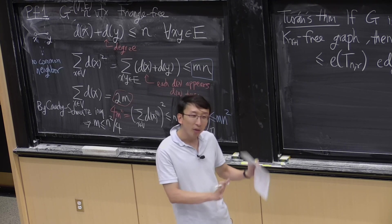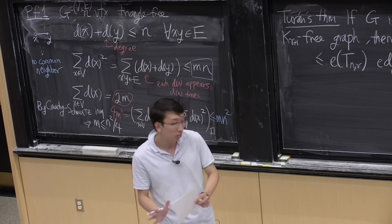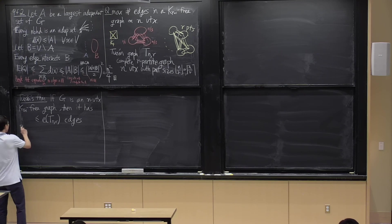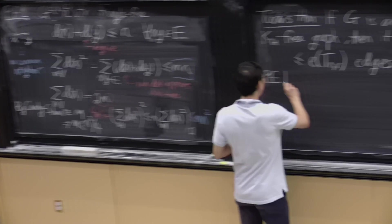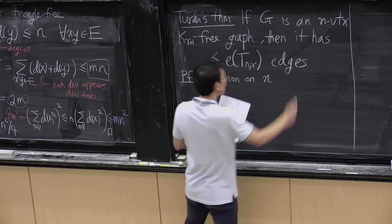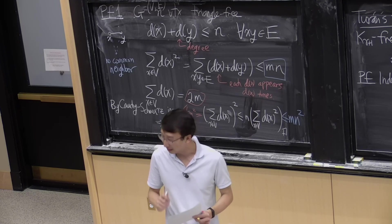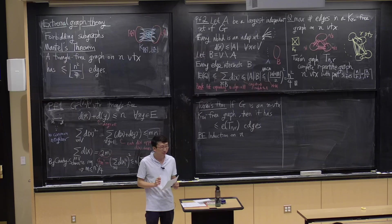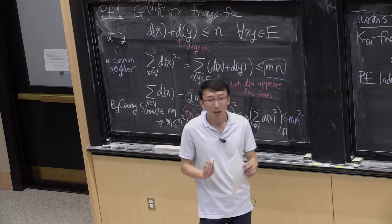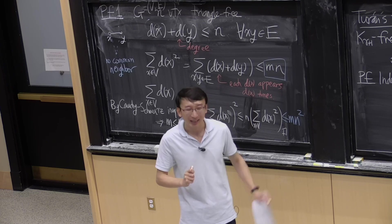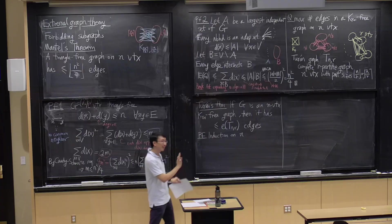Some proofs you can think about: are they related to the proofs of Mantel's theorem? The first proof uses induction on the number of vertices. This is one of the very few times in this course where we will see induction. Induction is a powerful technique in combinatorics, but for almost the rest of the course we won't have clean examples where increasing n by 1 buys you much.